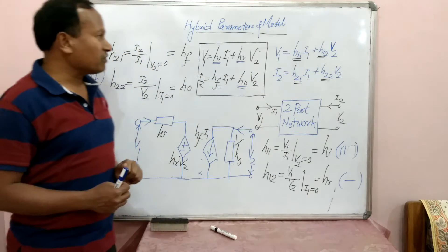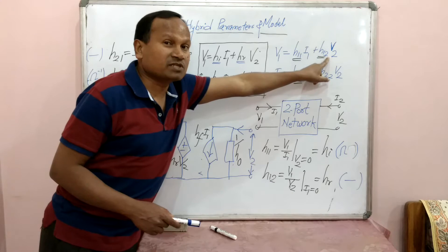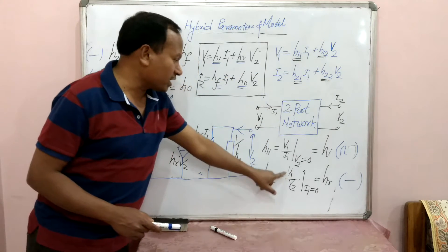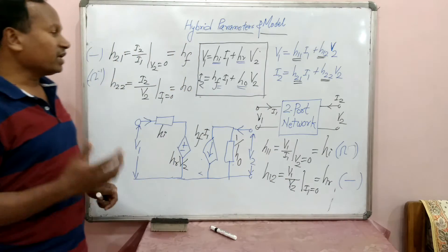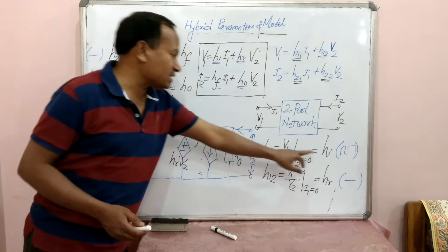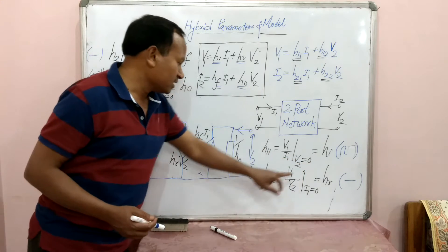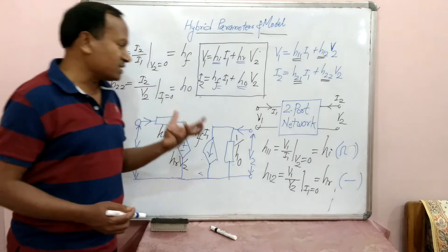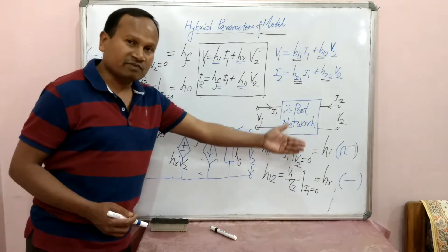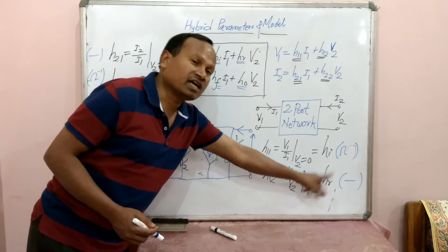To find H11: set V2 = 0 in the first equation to get H11 = V1/I1. Similarly, H12 = V1/V2 with I1 = 0. H11 can also be expressed as HI, which is input impedance with output short circuit. H12 = V1/V2 is the reverse voltage gain, so it is denoted as HR, since V1/V2 is the reverse direction compared to the forward voltage transfer function.